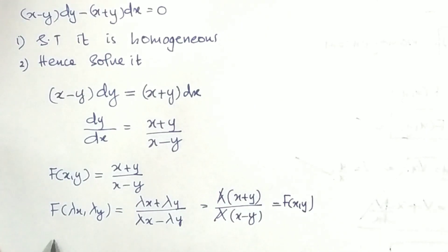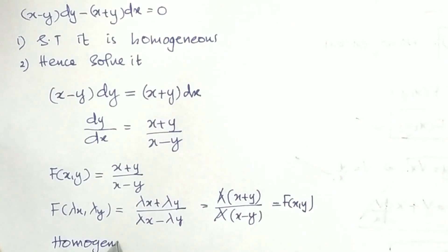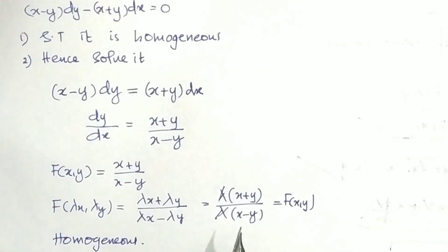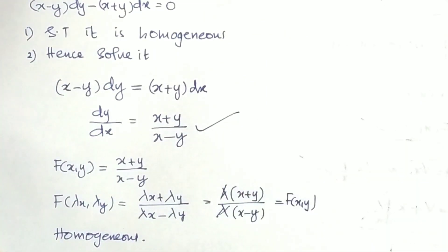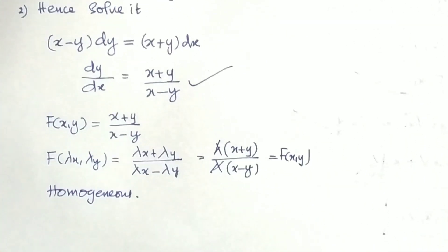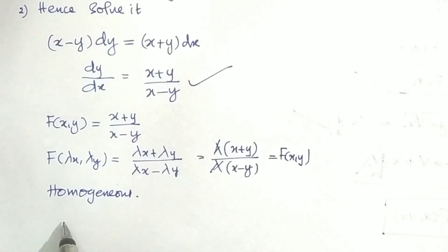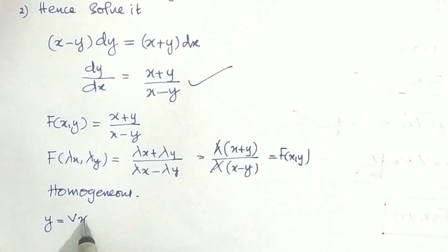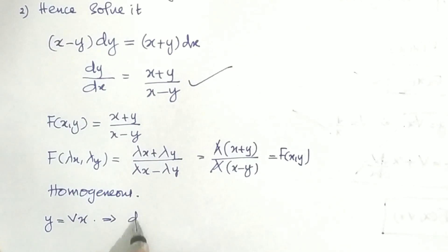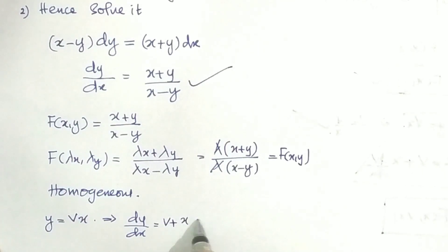Since f(λx, λy) = f(x, y), the function is homogeneous of degree 0, and the differential equation is homogeneous. Now we solve using the substitution y = vx, so dy/dx = v + x dv/dx.